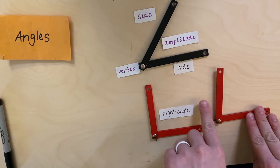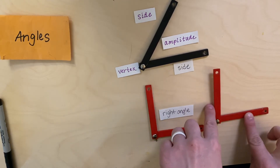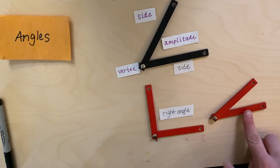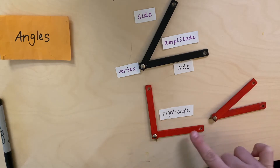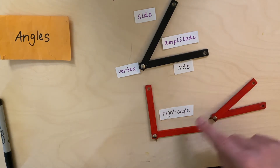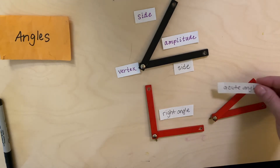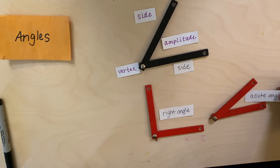Here we see a right angle, but this angle comes down here — it's actually a little smaller. The space, the amplitude on this angle, is much smaller than a right angle. An angle that has an amplitude smaller than a right angle is called an acute angle.